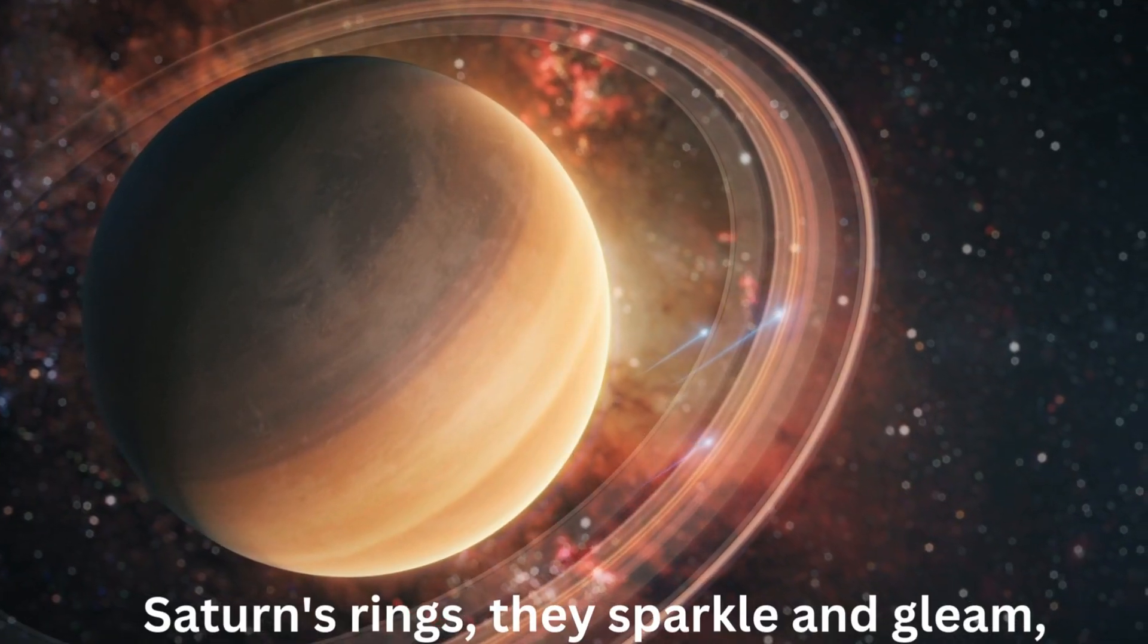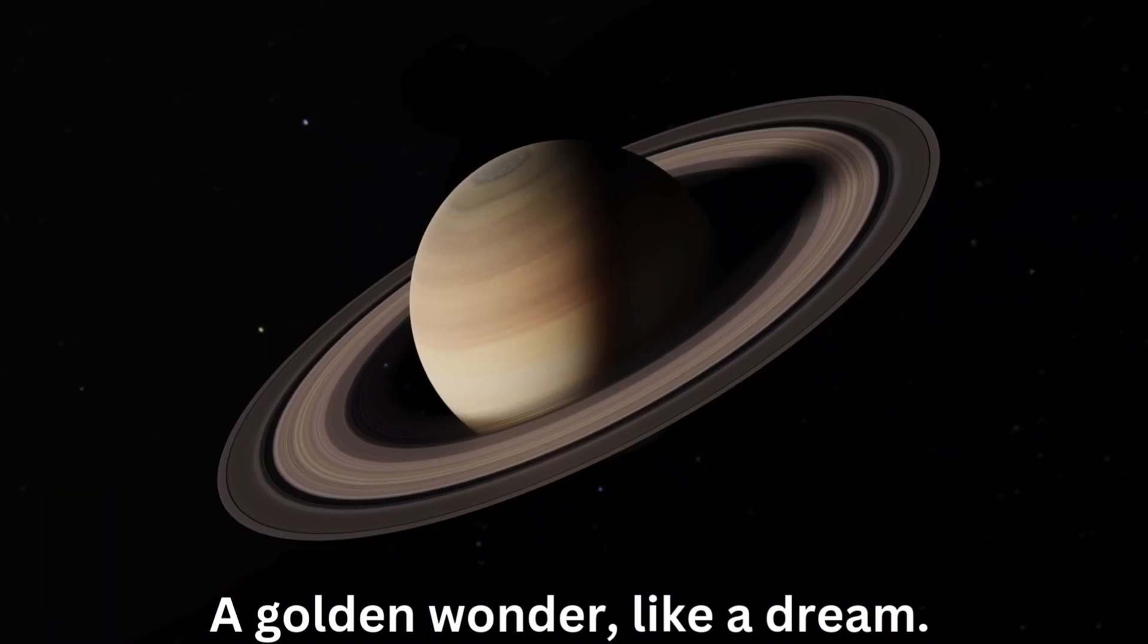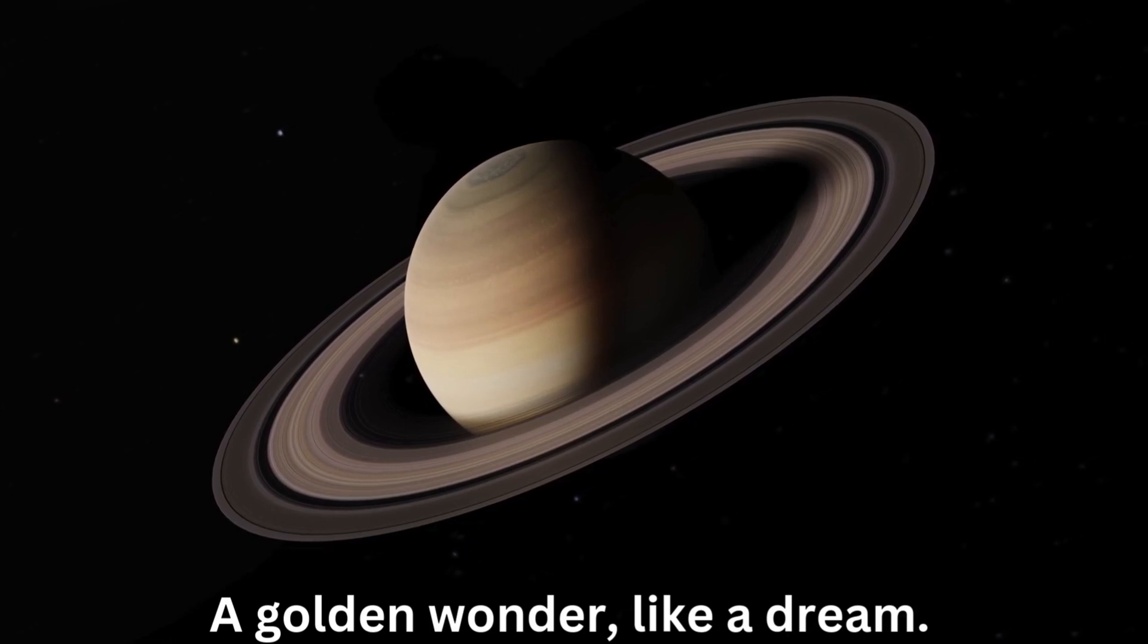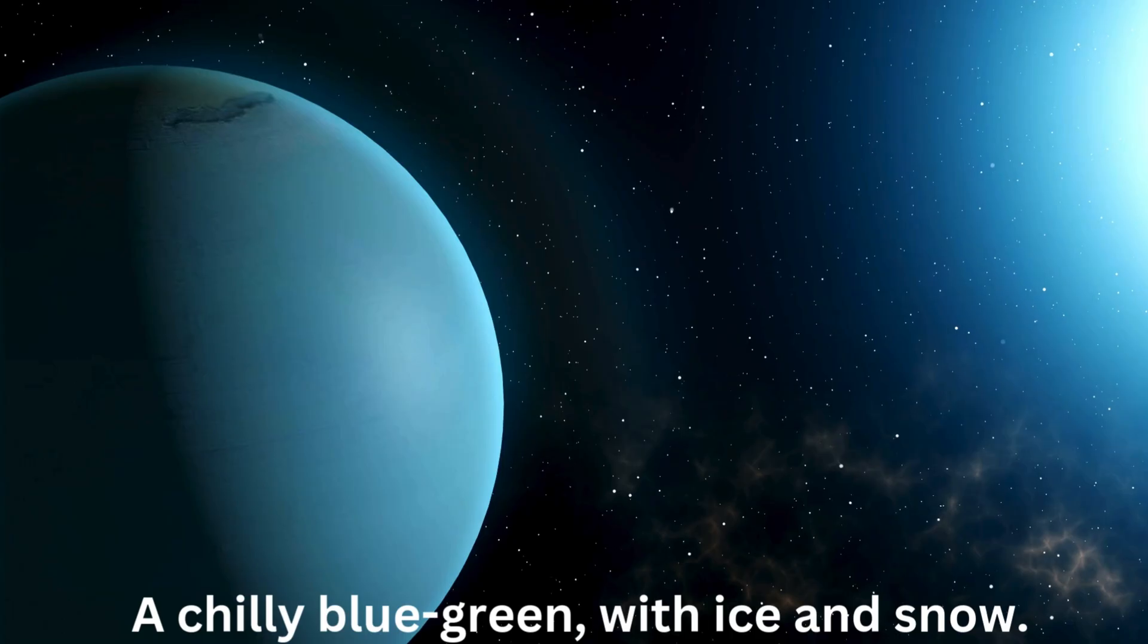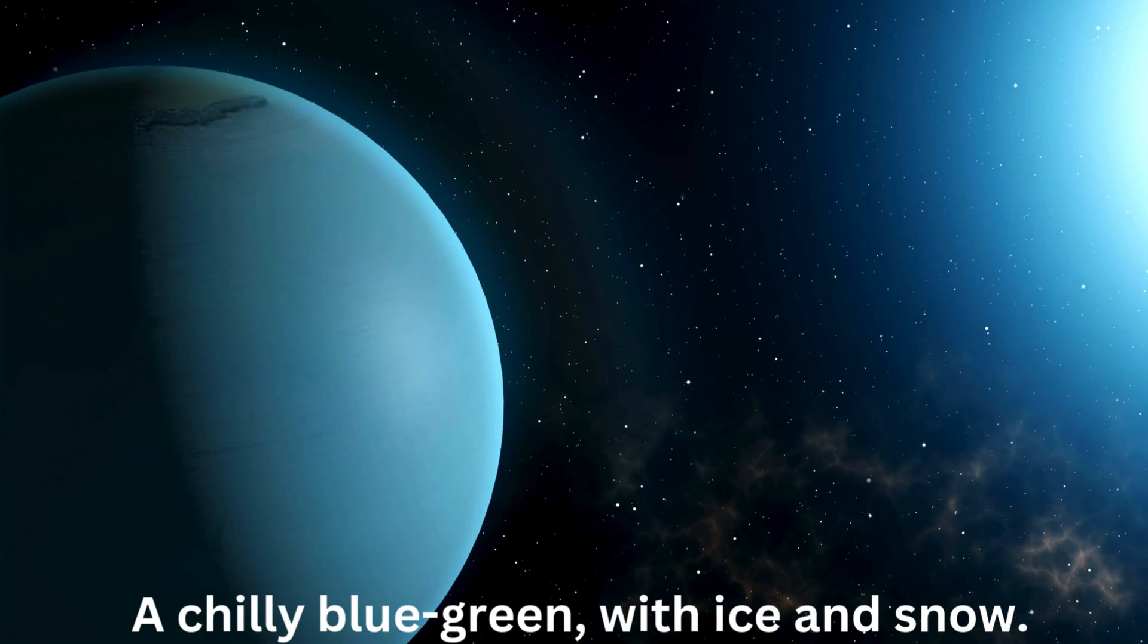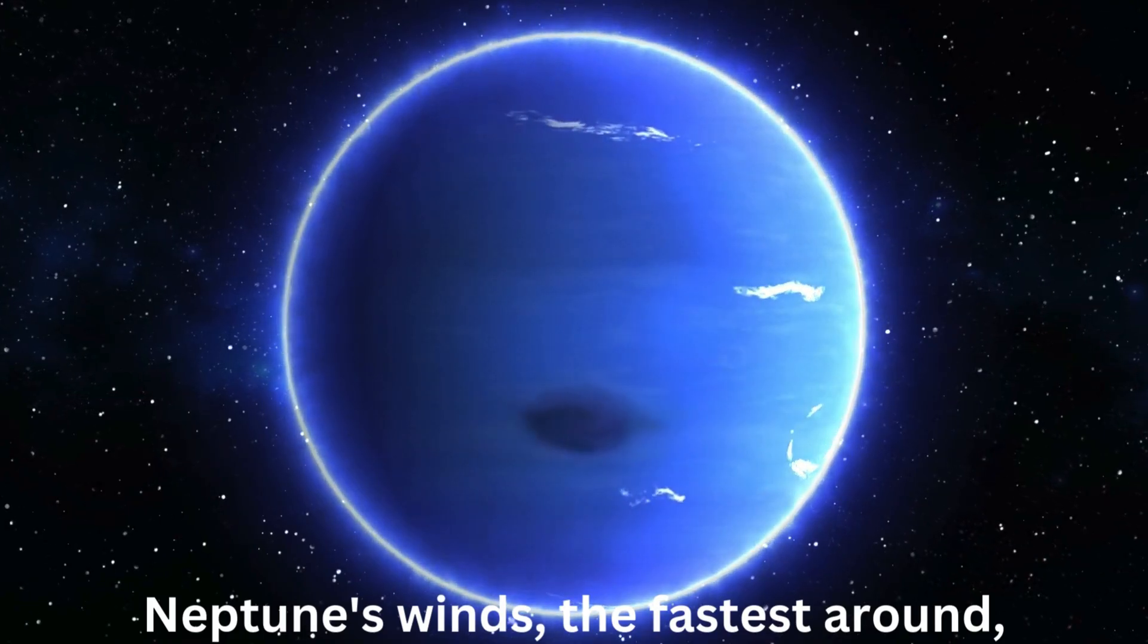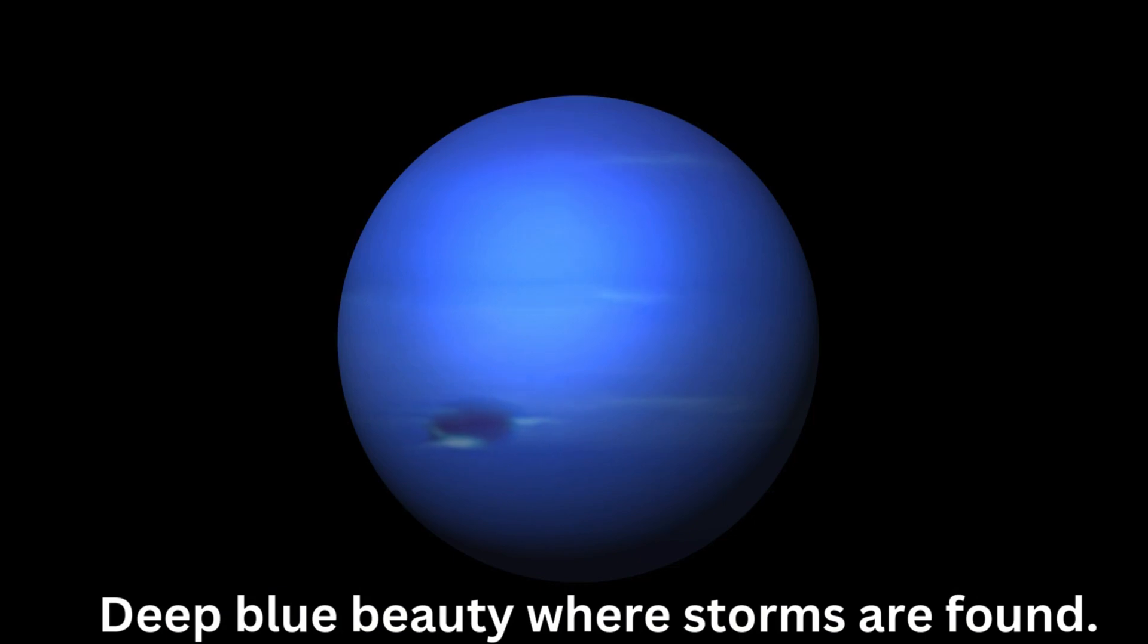Saturn's rings, they sparkle and gleam, a golden wonder, like a dream. Uranus spins, it's tilted so, a chilly blue-green with ice and snow. Neptune's winds, the fastest around, deep blue beauty where storms are found.